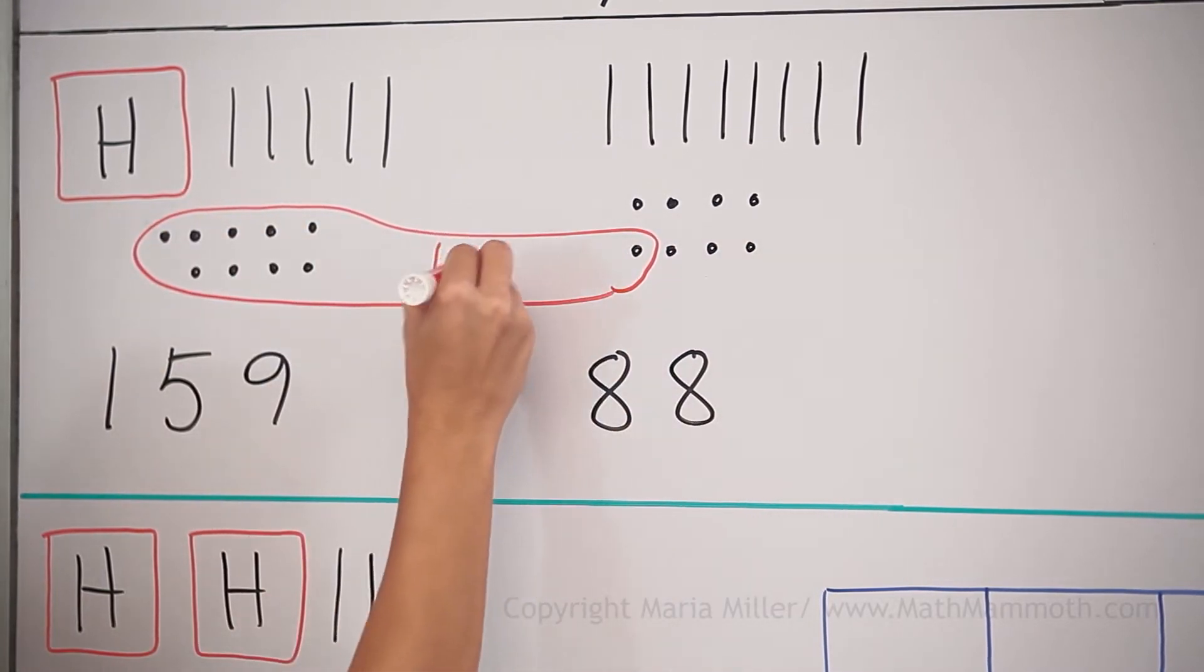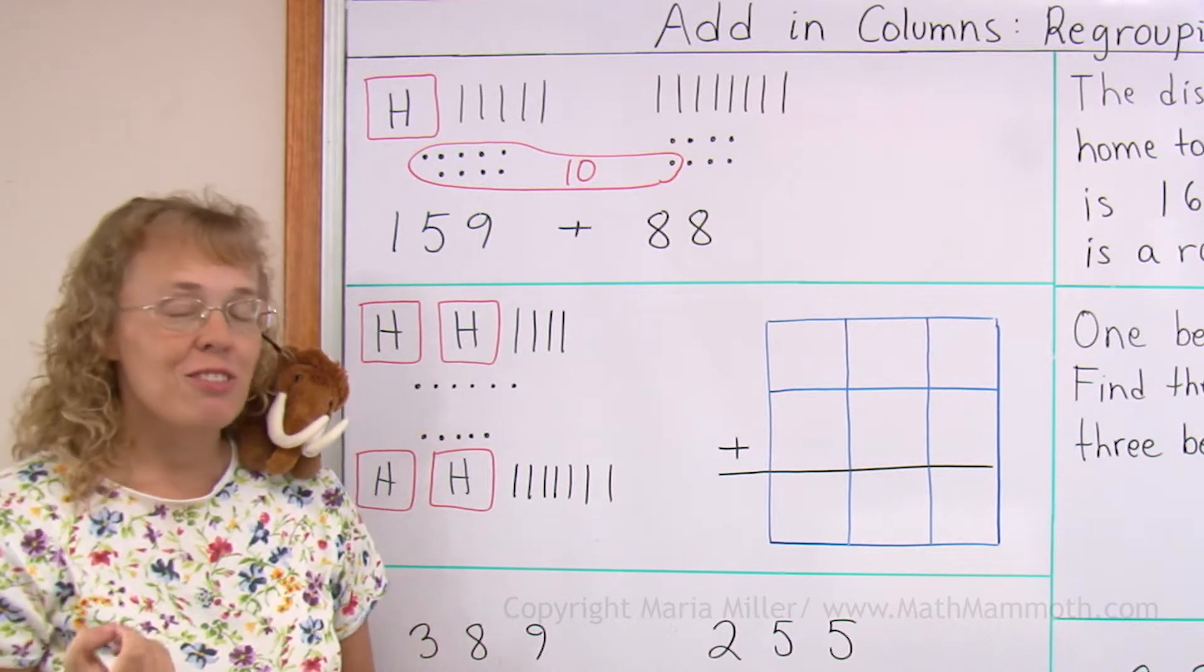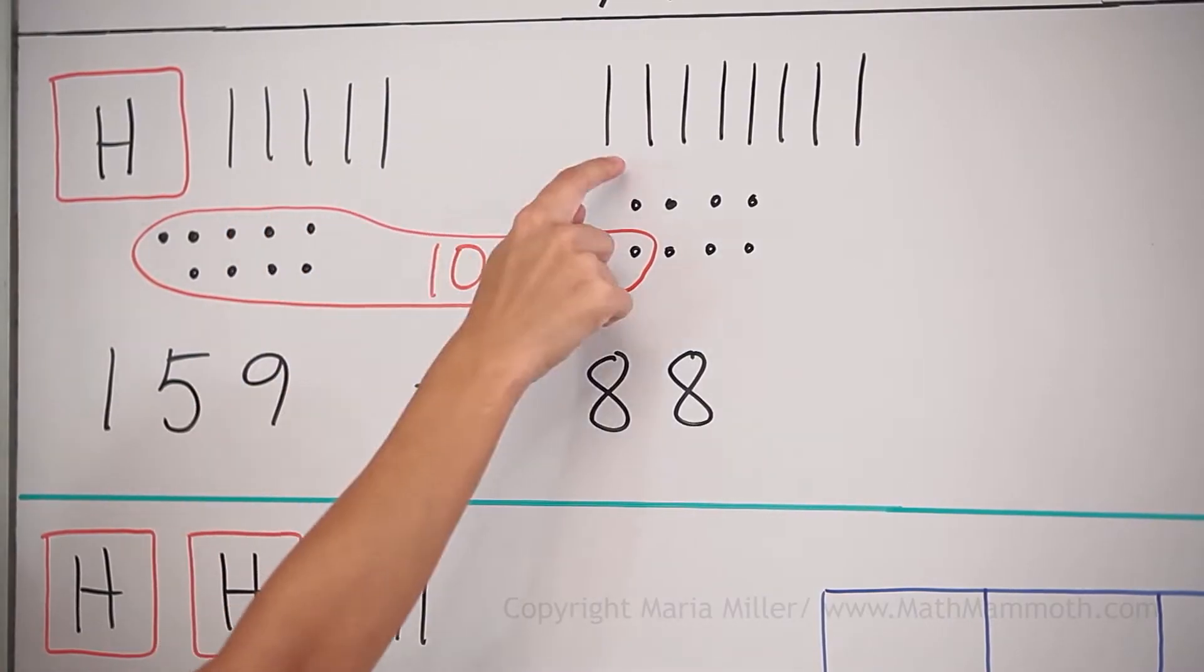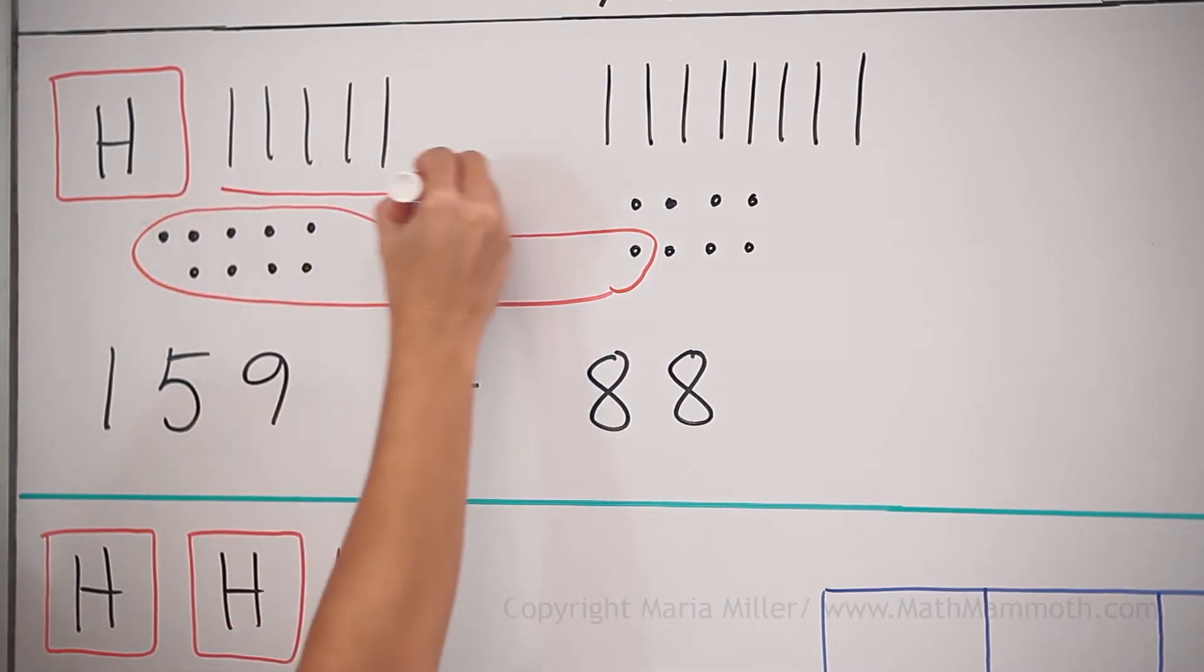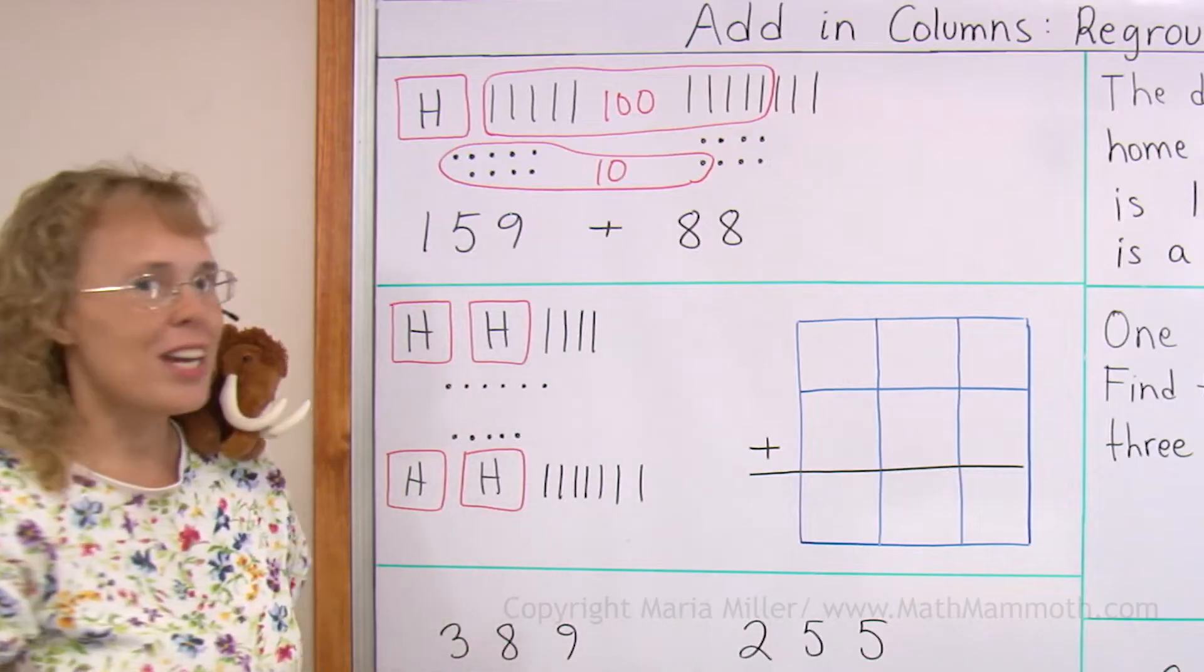So there's a 10. But then I also can make a new 100 from all those 10s. Five 10s from here and five from there. So there's a new 100 now.